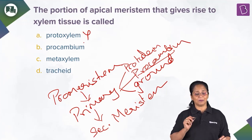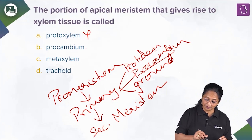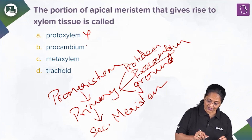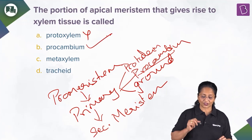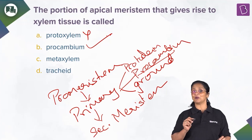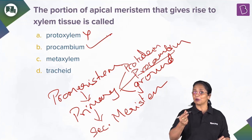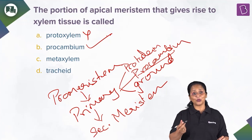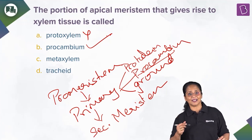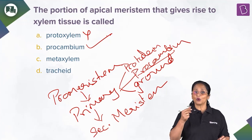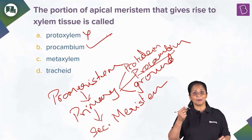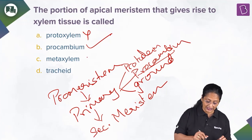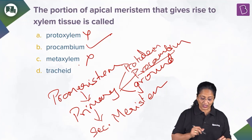Procambium — yes, procambium gives rise to the xylem tissue. This is correct. Meta-xylem: the primary xylem has both proto-xylem and meta-xylem. Proto-xylem is formed first and meta-xylem is formed later. So meta-xylem is wrong.